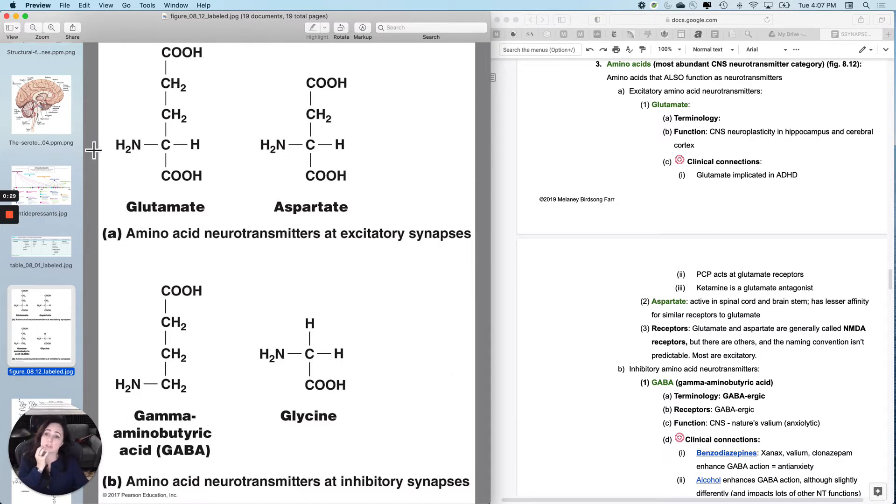There are two that are generally excitatory and two that are generally inhibitory. For each, one is more common in the brain and one is more common in the spinal cord.